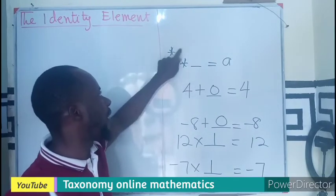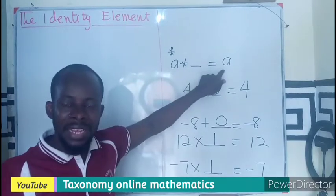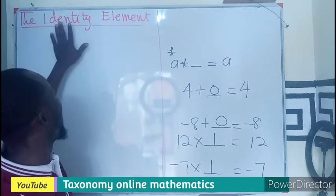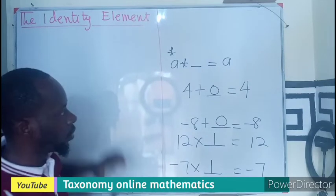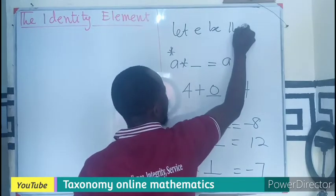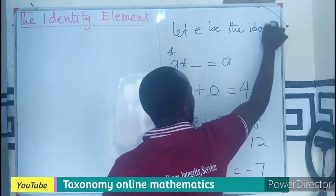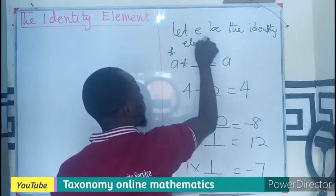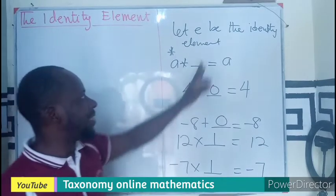Regardless of how the operator is defined, I should always get A. That is what we are trying to do here. And under identity element, we use the letter E, small letter. So here we let E be the what? We always let E represent the identity element.